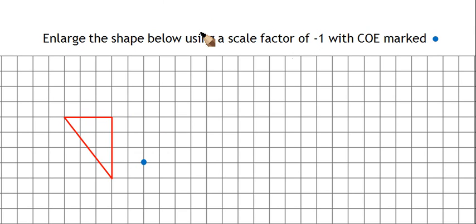We've already worked out that scale factors bigger than 1, like 2 or 1.5, make a shape bigger. And scale factors between 0 and 1, like a quarter or a half, make a shape smaller.